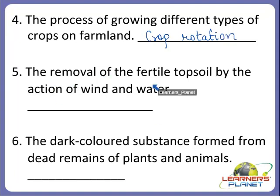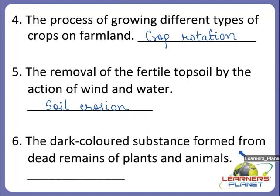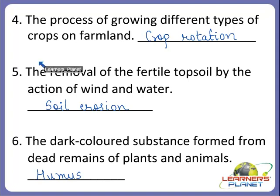Now the next one: the removal of the fertile topsoil by the action of wind and water — what is this called? Yes — it is called soil erosion. Because of this, plants or crops are not able to grow. Now the next one: the dark colored substance formed from the dead remains of plants and animals — it starts with the letter H. Yes, it is humus. The dark colored substance formed from the dead remains of plants and animals is called humus.